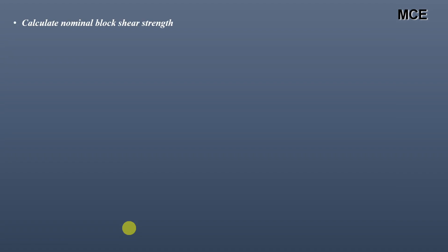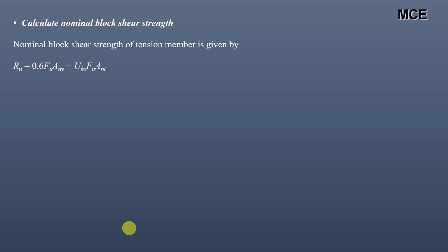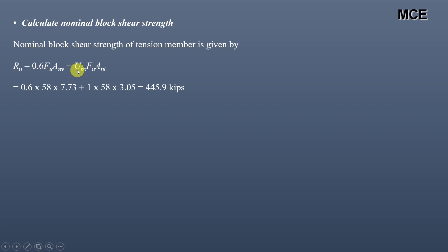Nominal block shear strength per AISC 360 equation: 0.6Fu × Anv + Ubs × Fu × Ant. Substituting values with Fu = 58 ksi for A36 gusset plate, net shear area Anv = 7.73 in², Ubs = 1, and net tension area Ant = 3.05 in², this gives a nominal block shear strength of 445.9 kips.